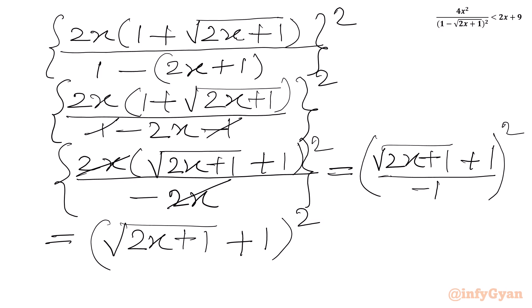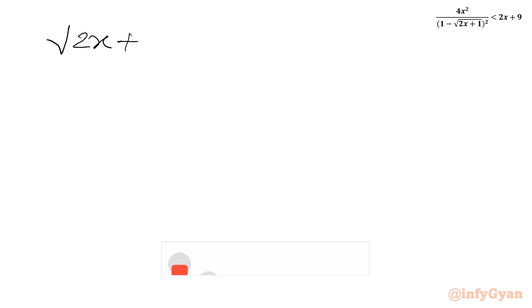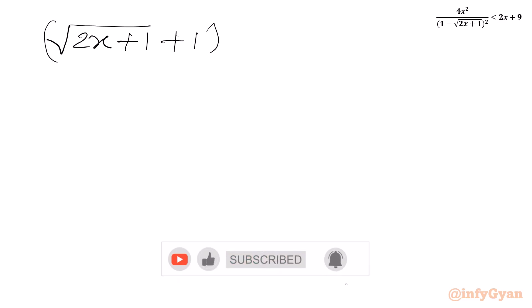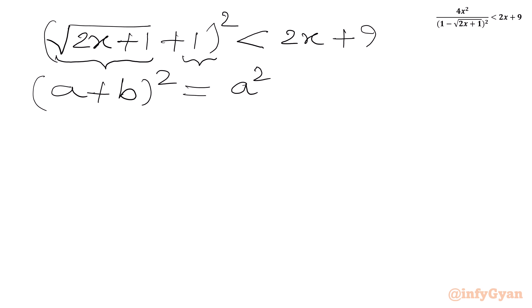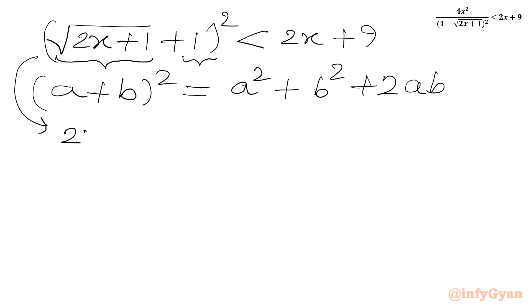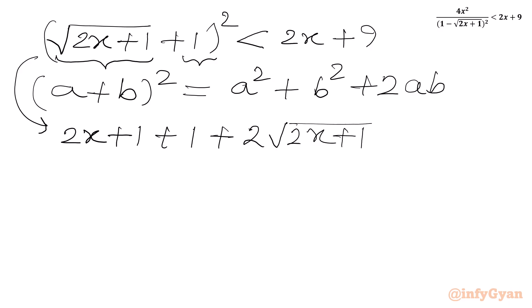Now let us solve our inequality: (√(2x+1) + 1)² < 2x + 9. Expanding using (a+b)² = a² + 2ab + b², with a = √(2x+1) and b = 1, we get (2x+1) + 2√(2x+1) + 1 < 2x + 9, which simplifies to 2x + 2 + 2√(2x+1) < 2x + 9.